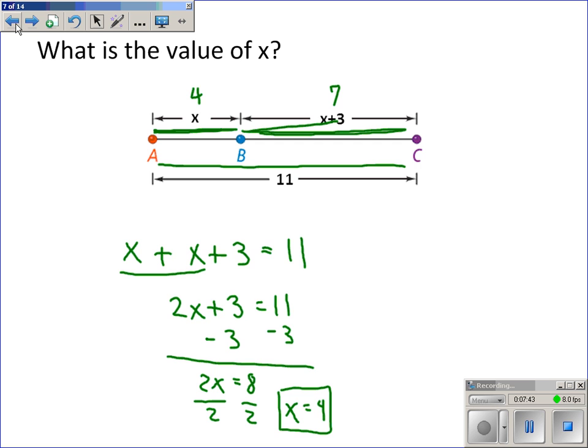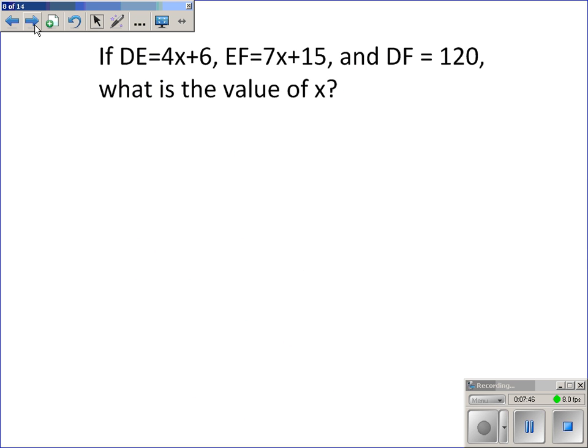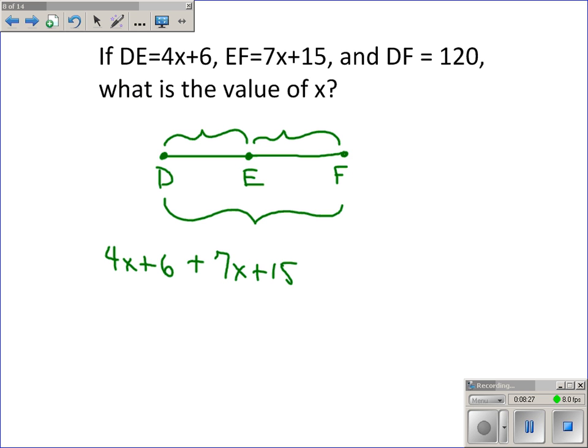So the sum of the parts is equal to the whole. If DE is equal to 4X plus 6 and EF is equal to 7X plus 15 and DF is 120, what is the value of X? Now, there's no picture for us. I'll just draw one real quick. This must be E, and this must be F. This is not to scale, because I don't know what the lengths are. But DE plus EF must be equal to DF. So 4X plus 6 plus 7X plus 15 should be equal to 120, because this part plus this part is equal to the whole.